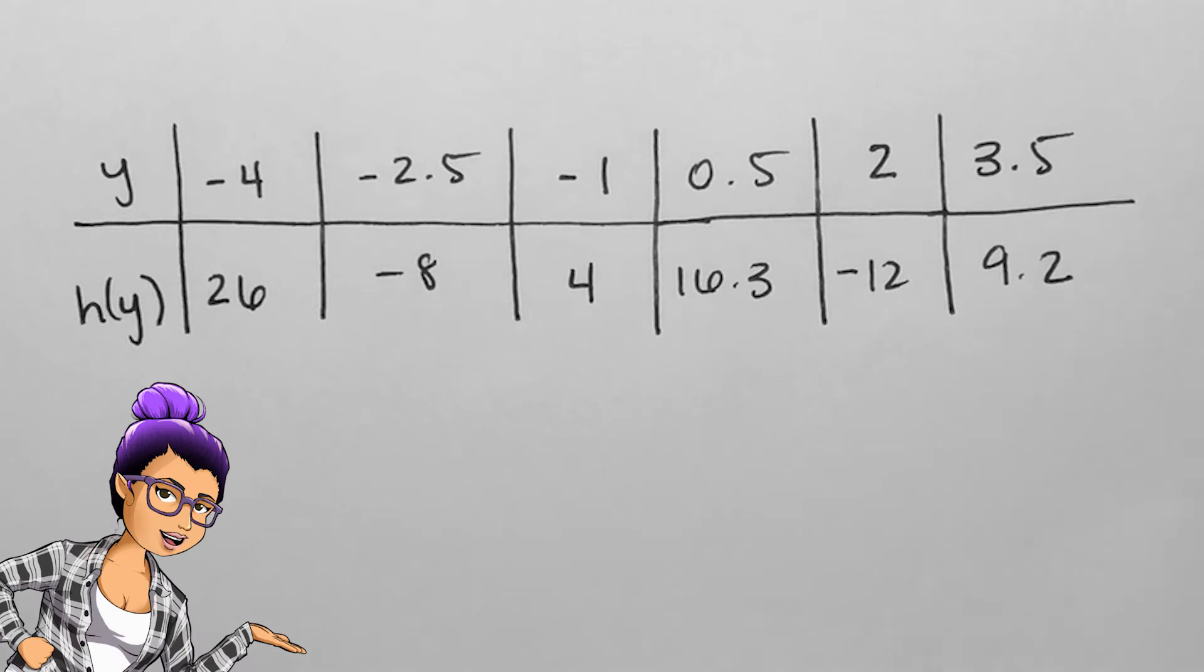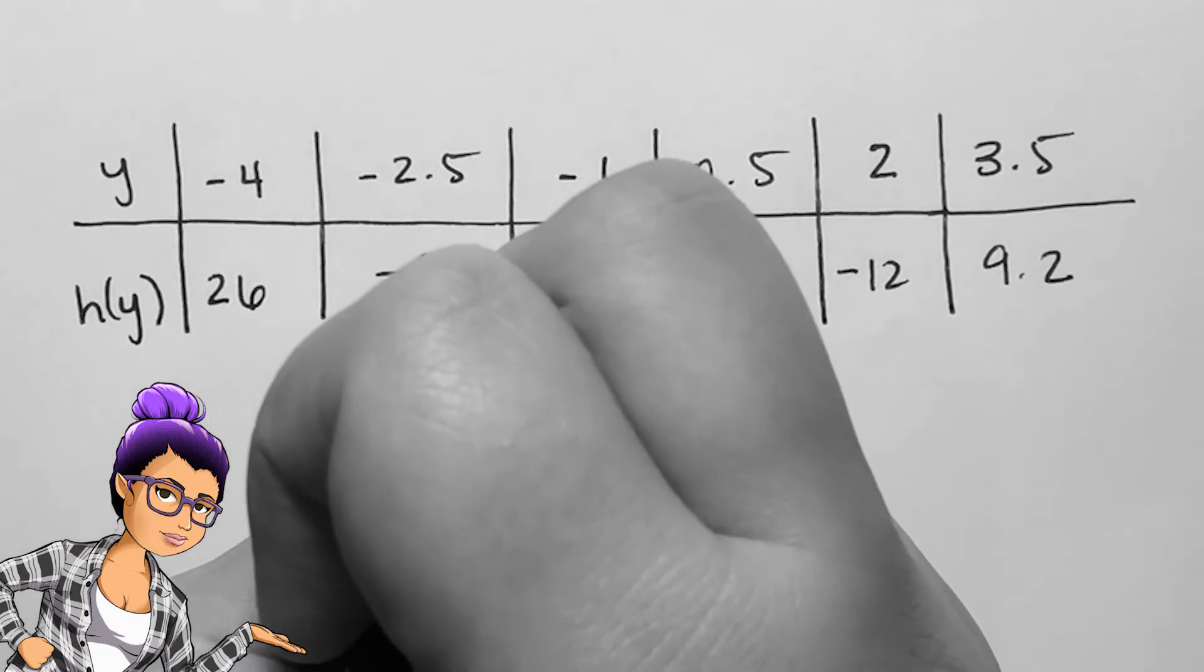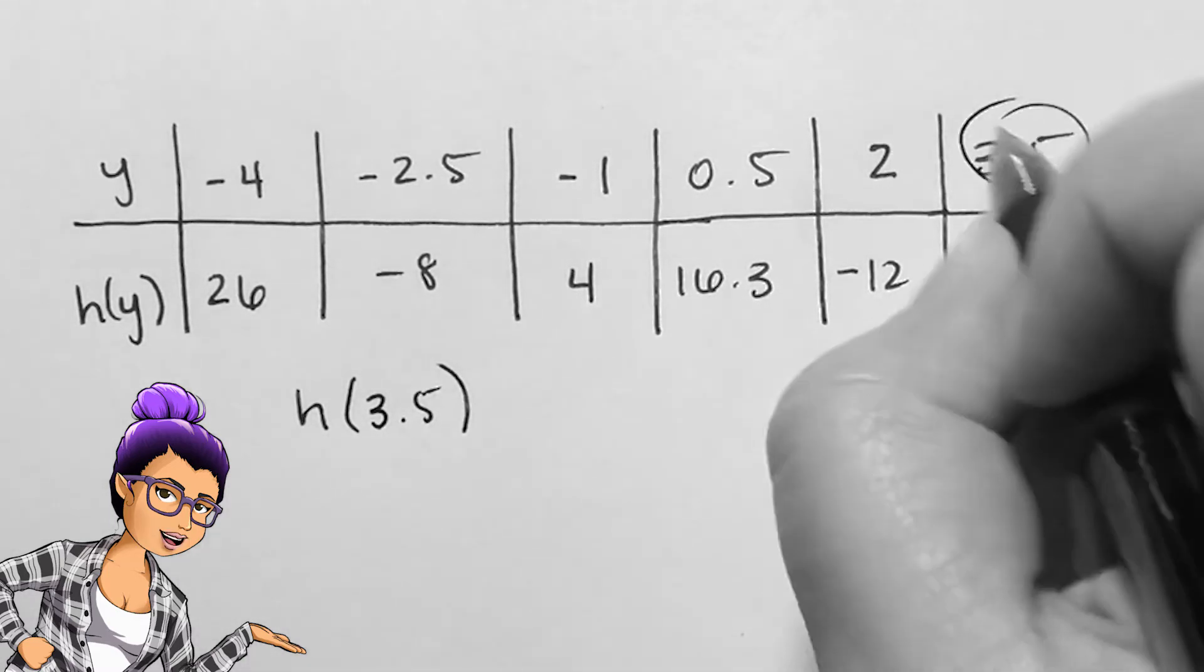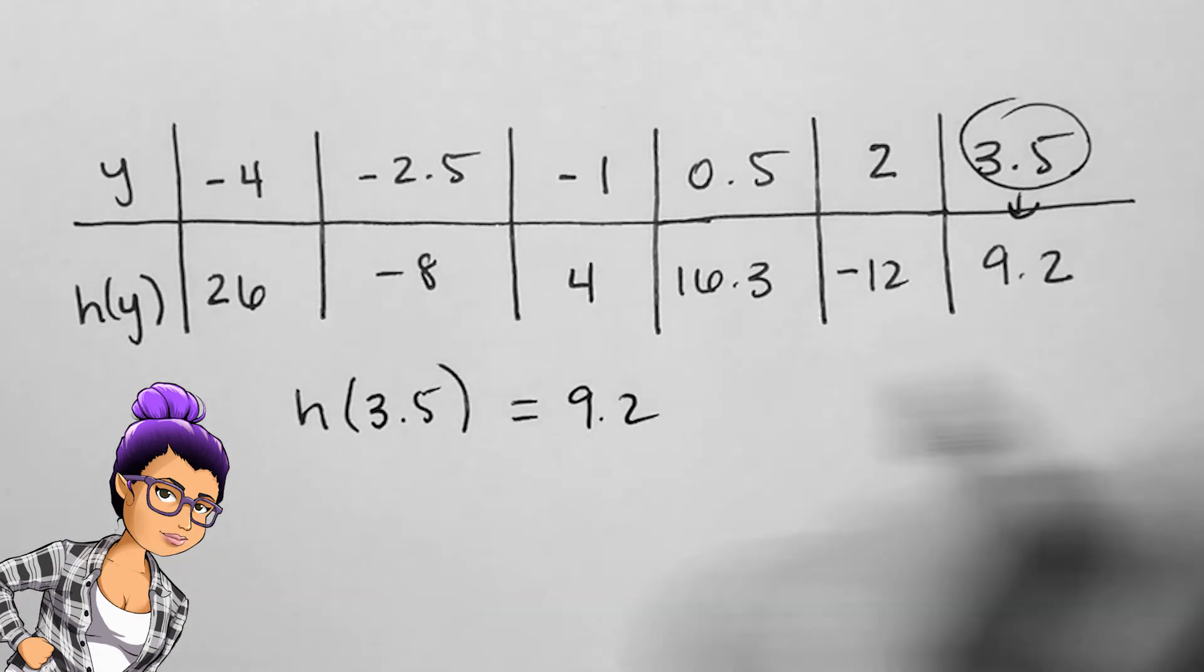Evaluating a table has less guesswork. Given this table representing the function h with inputs y, I can find h of 3.5 by finding 3.5 in the y row and seeing which output I get, which is 9.2.